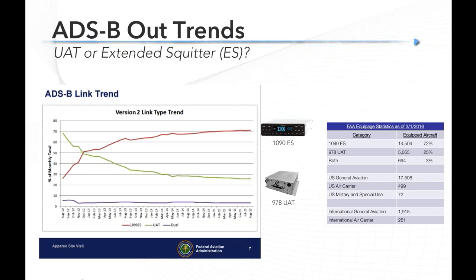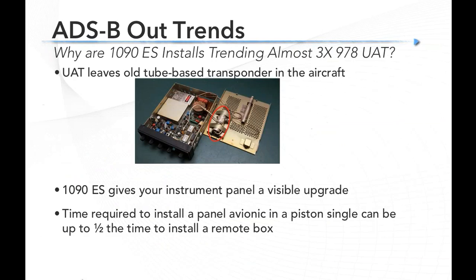What are fellow pilots actually doing? The data is surprising: panel-mounted 1090 extended squitters are being installed at close to three times the rate of remote UATs. FAA statistics as of March 1st, 2016 confirm this trend is holding. U.S. General Aviation pilots are adopting in the largest numbers. The question is why is 1090 trending so strongly?